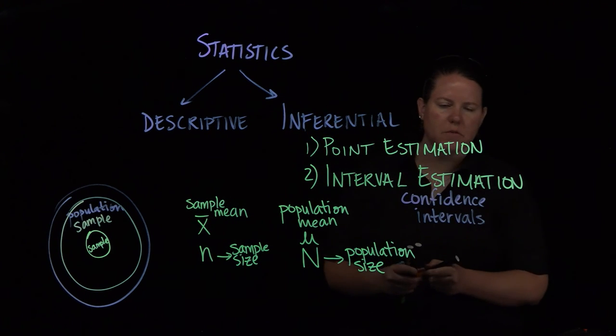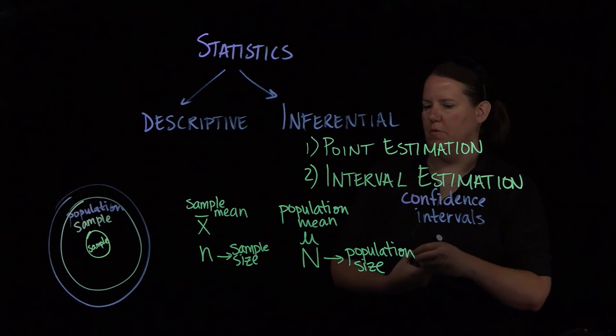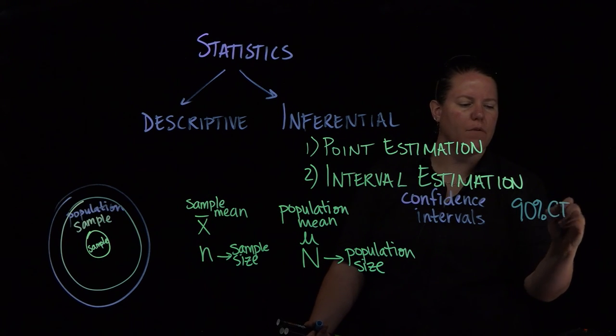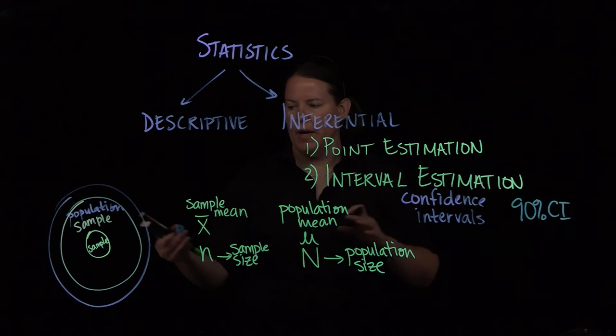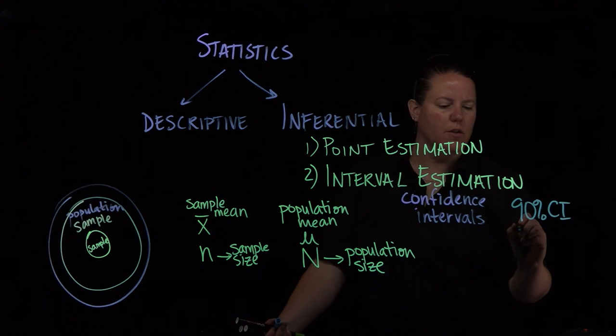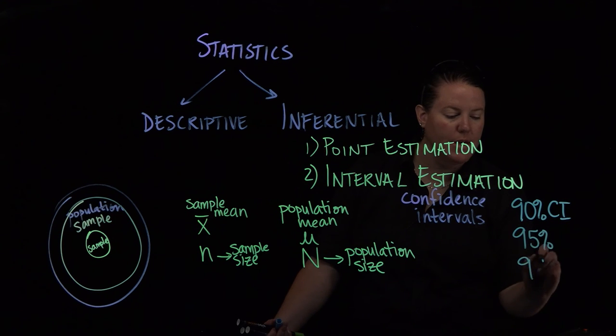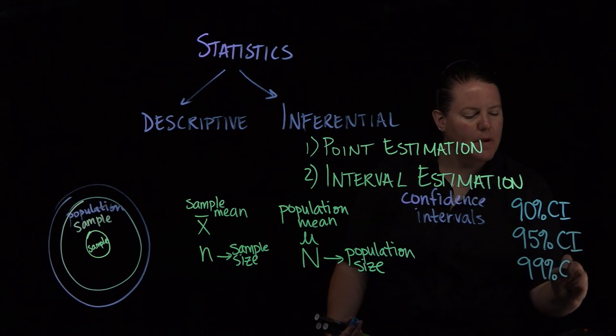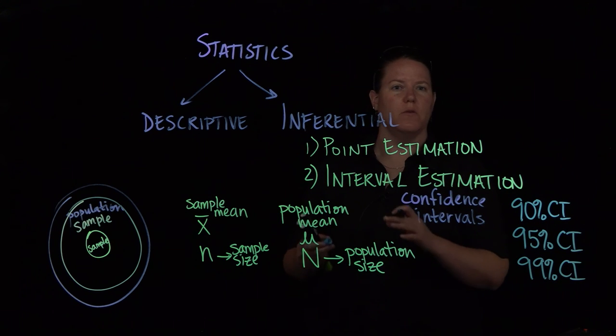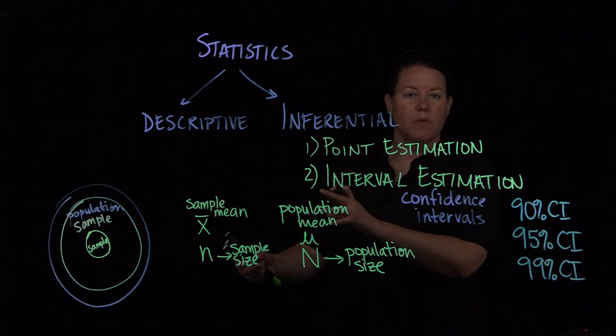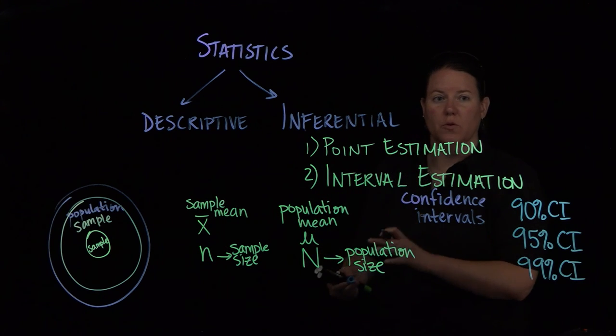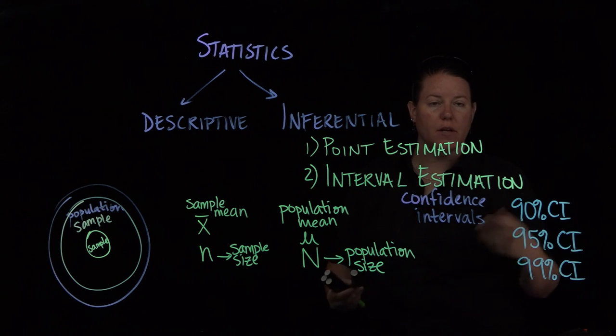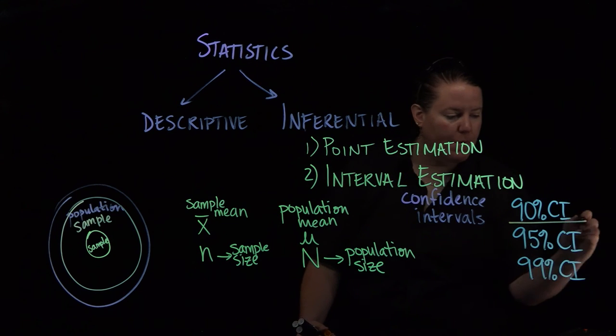I think this works for 90% of the population. I'm fairly confident that 90% of the population are covered by the statistics that I've run on my sample. And now I'm inferring to the population. And you can have 90% confidence, you can have 95% confidence, you can have 99% confidence. But it's still leaving some room that basically, I'm not entirely sure this works for every single data point within my population. I'm not sure that this works for every single subject in my population. But I have some confidence that it's going to work for the majority of them.